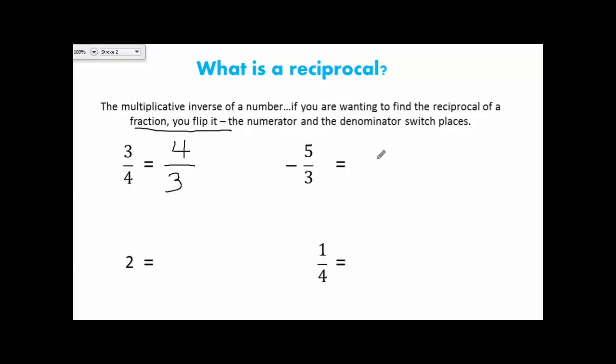Over here, I have negative 5 thirds. Finding the reciprocal does not change the sign. It's still negative, but this time instead of 5 on top and 3 on bottom, my denominator becomes my numerator and my numerator becomes my denominator. Now we have the number 2. But 2 is a whole number, not a fraction. Remember, any whole number can be made a fraction by giving it a denominator of 1. If I want to find the reciprocal of 2 over 1, I flip it and get 1 half.